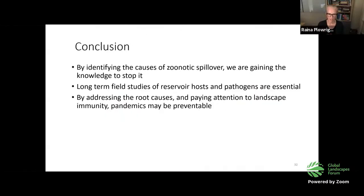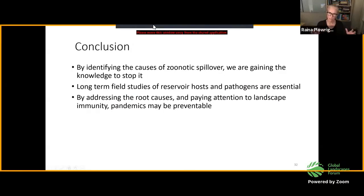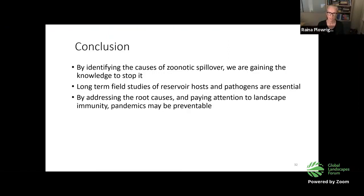By developing long-term datasets on both the reservoir host and the virus, we're able to understand the system and its root causes. By addressing those root causes, we can restore landscape immunity — essentially allowing bats to feed and gain the nutrition they need without having to come into human areas, thereby reducing the increased proximity that increases spillover risk. Thank you.